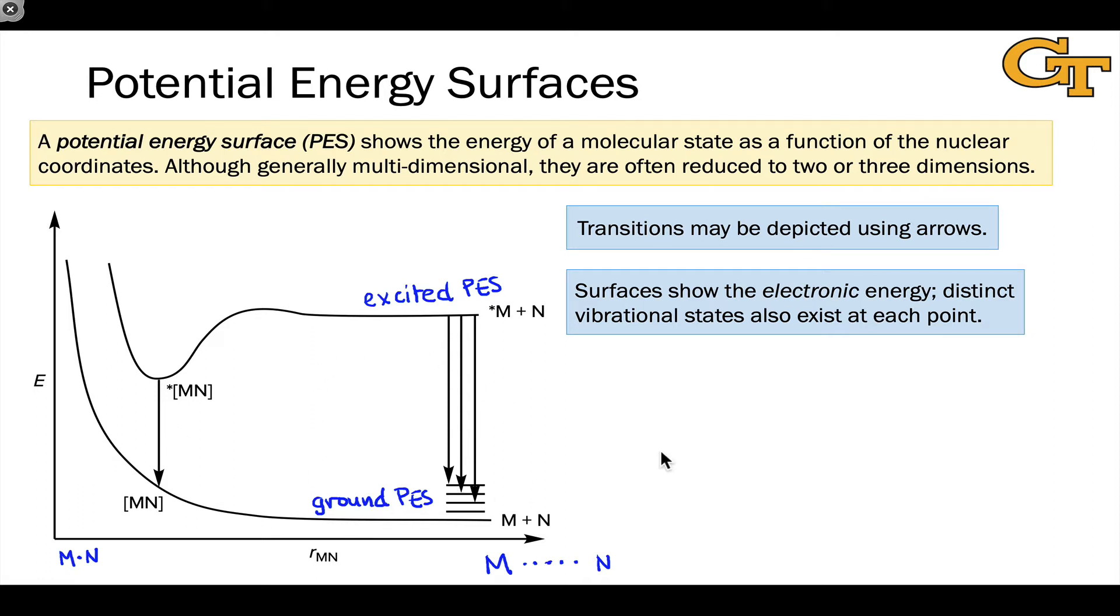Above each curve, vibrational levels exist at each point along the x-axis. So here I've shown some vibrational levels way out here on the far right, with M and N relatively far separated. Distinct vibrational levels exist there. Different vibrational levels exist at this other point on the ground potential energy surface.